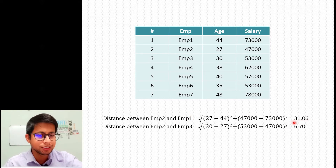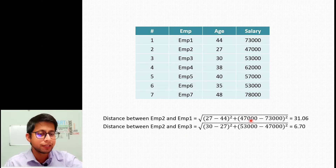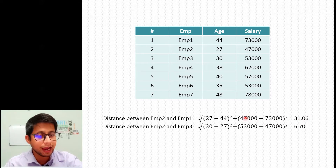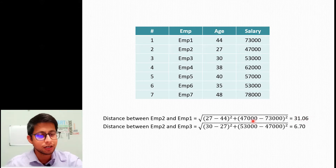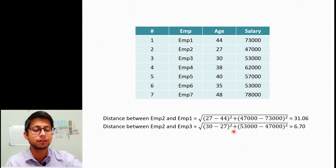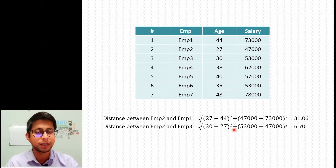But this value of 31 is more impacted because of higher range values — forty-seven thousand and seventy-three thousand are in thousands. If the salary were in millions or lakhs, this value could be much more than 31. The higher range is directly impacting the final distance value, so we need to scale these values into one range to determine similarity measures correctly.